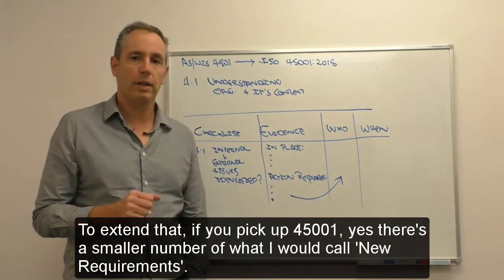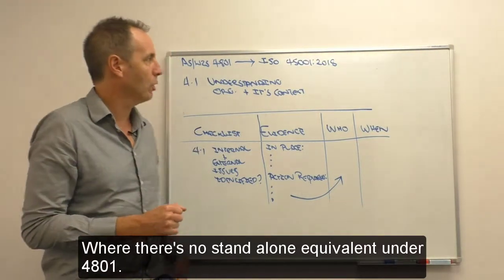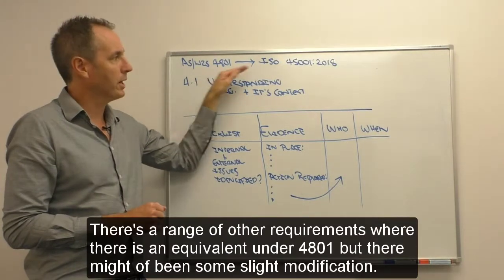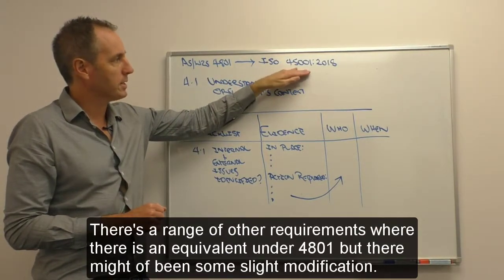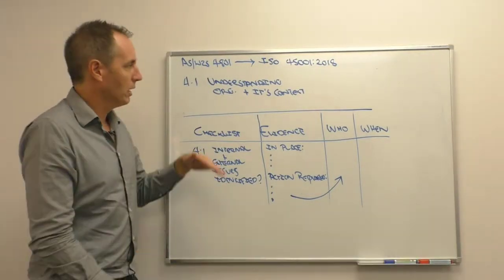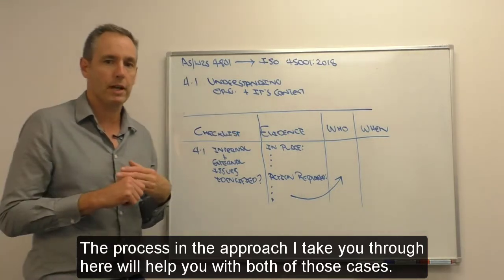If you pick up 45001, there's a smaller number of what I would call new requirements where there's no standalone equivalent under 4801. There's a range of other requirements where there is an equivalent under 4801, but there might have been some slight modification. The process and approach we'll take you through here will help you with both of those cases.